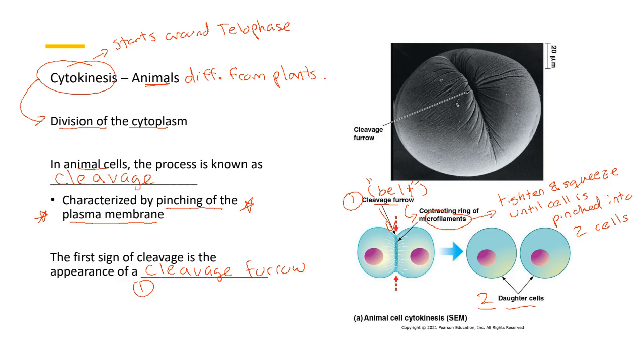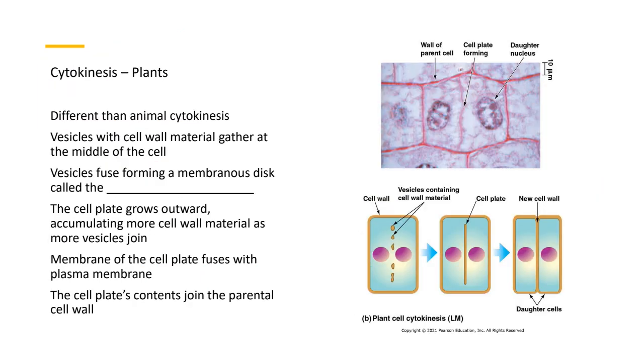Plant cytokinesis is going to be a little bit different for one big reason. So cytokinesis in plants, different than animal cytokinesis. What's going to happen here is you have a bunch of vesicles that are going to have cell wall material. This cell wall material, if you remember from a previous chapter, is going to be cellulose. And cellulose is a polysaccharide, and cellulose is what's going to make something called a cell wall. And that's why it's different, because plant cells have cell walls.